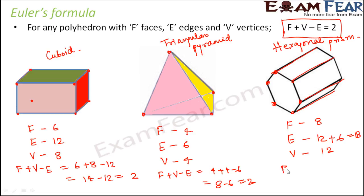So F plus V minus E which is equal to 8 plus 12 minus 18 that is 20 minus 18 which is equal to 2. So with these examples it has been proved that Euler's formula indeed is a true fact because it comes out to be true for all the polyhedrons.